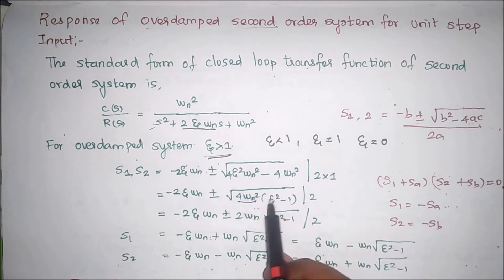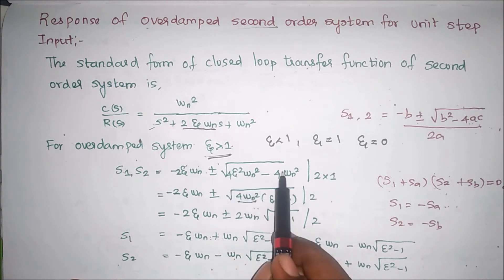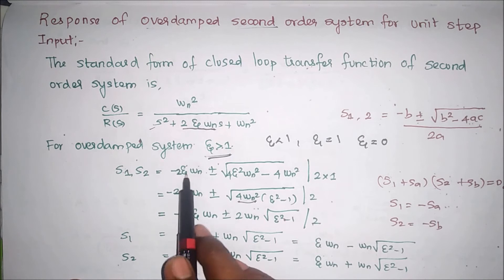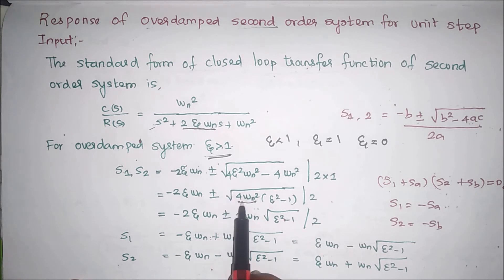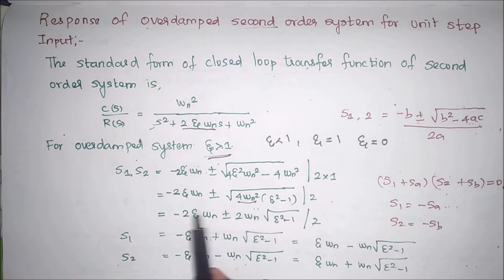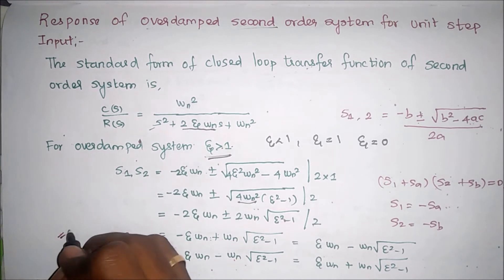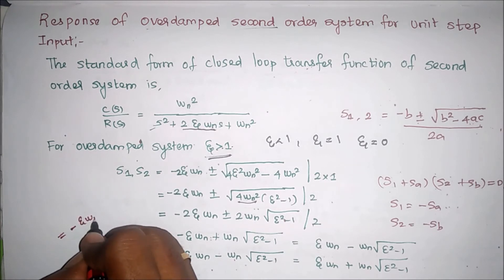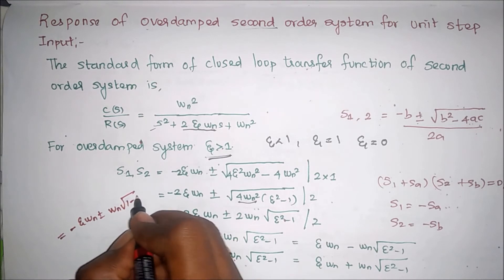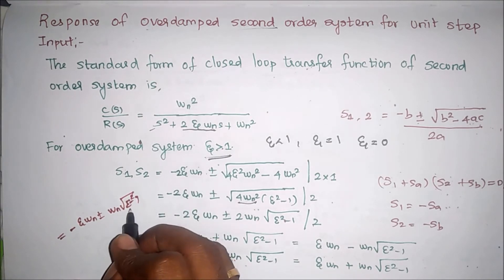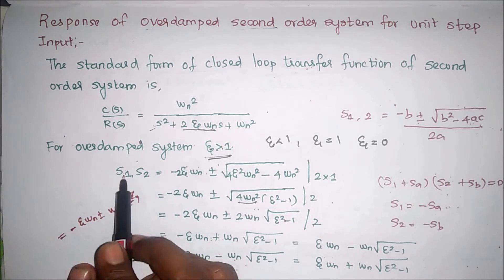We can factor out 4*omega_n squared from under the square root. Taking the square root of 4*omega_n squared gives 2*omega_n, and 2 is common, which cancels with the denominator 2. So the simplified roots are: minus eta*omega_n plus or minus omega_n times square root of (eta squared minus 1).